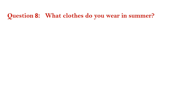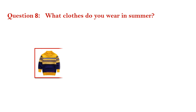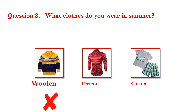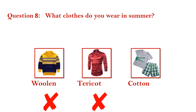Question number 8. What clothes do you wear in summer? Pullen — wrong. Terricot — wrong. Cotton — right. Answer is cotton.